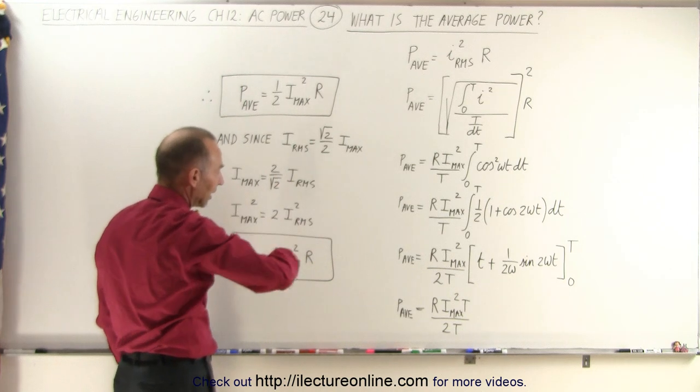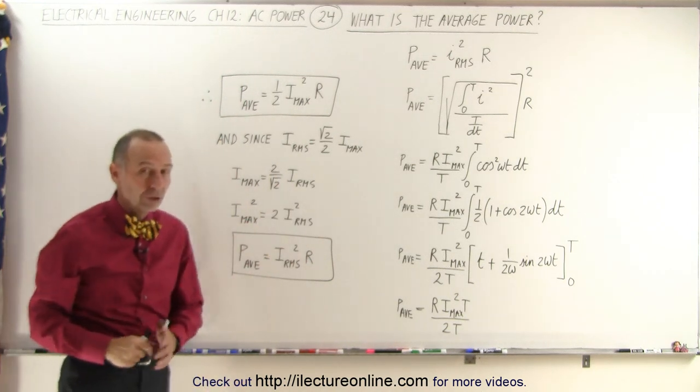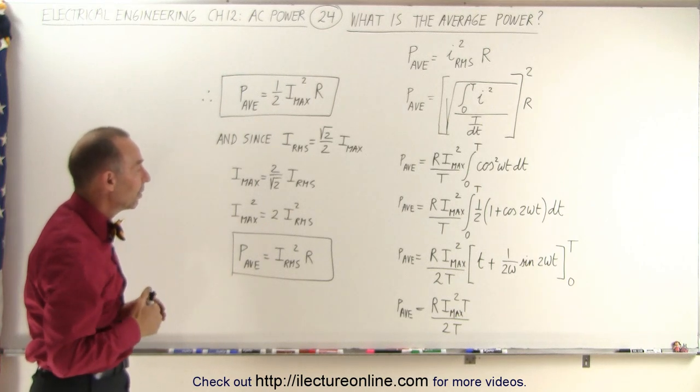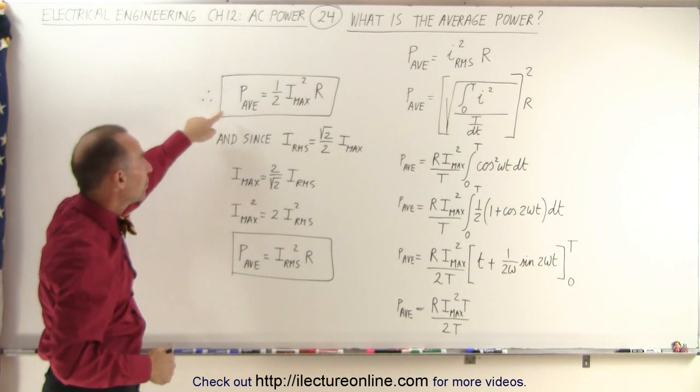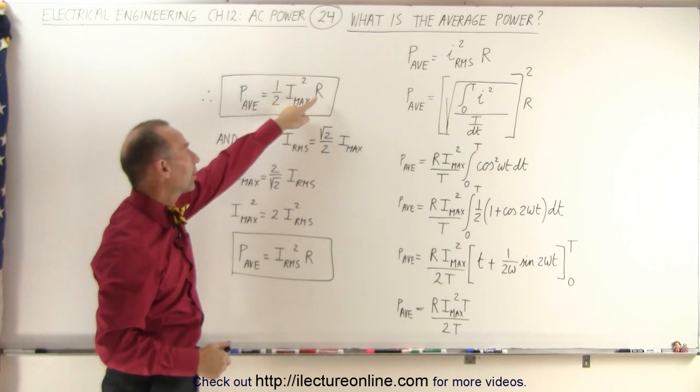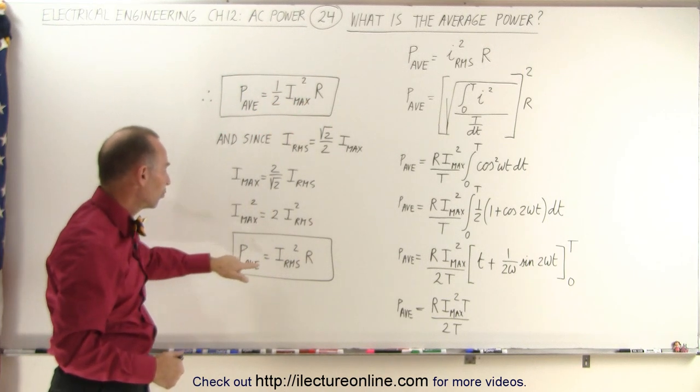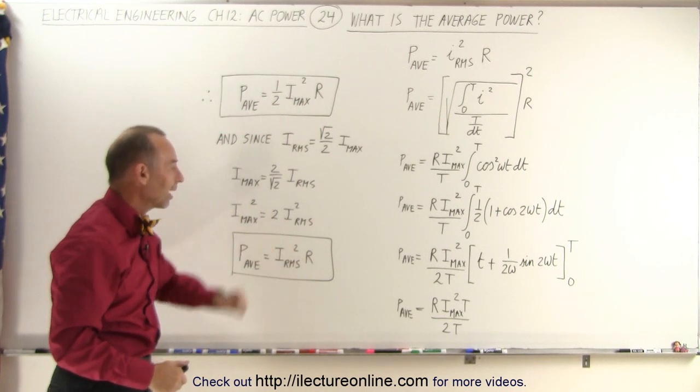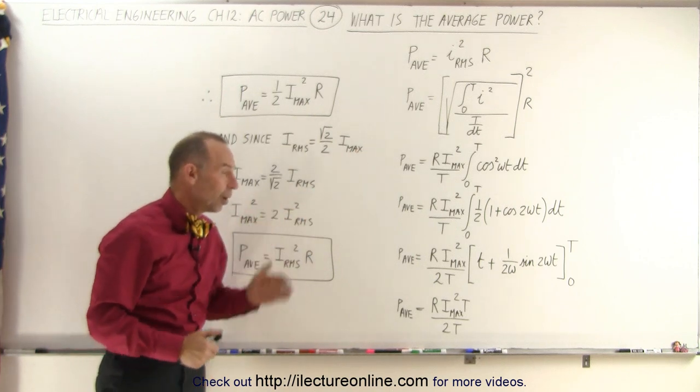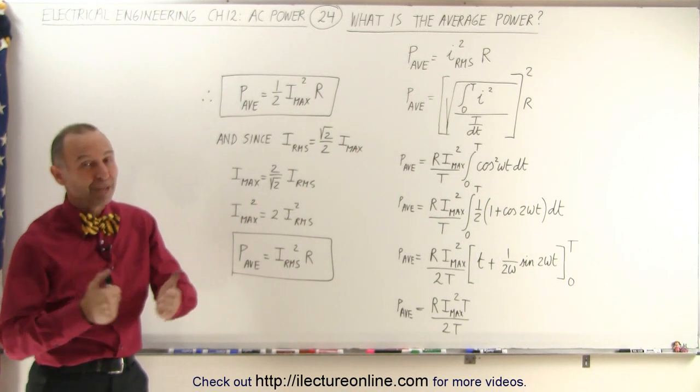So again, we come around to full circle. You want to see that there's this relationship that the average power consumed can be written as 1 half I max squared times R, or the average power consumed can be written as I RMS squared times R. And you can see how all that hangs together, and that's how it's done.